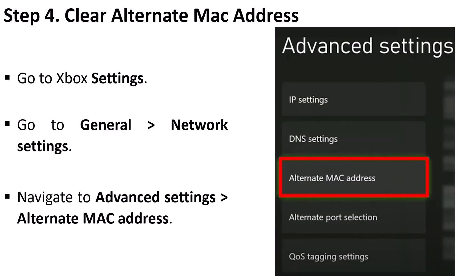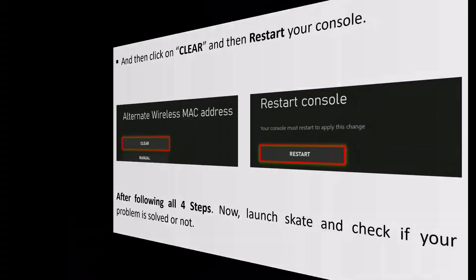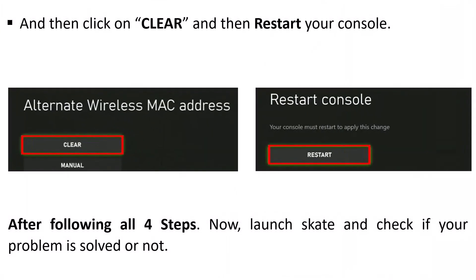Step 4: Clear alternate MAC address. Go to Xbox Settings, go to General, then Network Settings. Navigate to Advanced Settings, then Alternate MAC Address, and click on Clear. Then restart your console. After following all four steps, launch Skate game and check if your problem is solved.